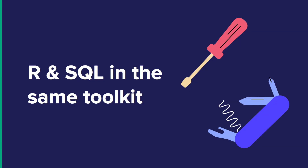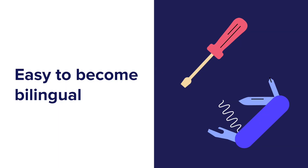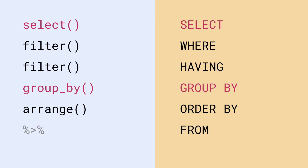The nice thing is, if you know one, it's fairly easy to become bilingual. If you look at just the main verbs in each of the two languages, you see there's a lot of overlap. Select is select, group by is group by. There are some things you have to learn — filter becomes where or having in SQL, arrange becomes order by, and so on. So there is a little bit of translation you have to do, but it's not too big of a leap.